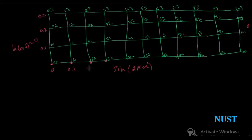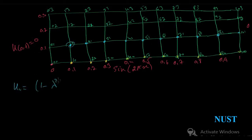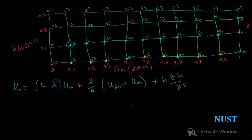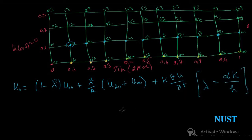X is changing as we move from left to right, and the change in velocity with respect to time moves from bottom to top. Before we use the governing equation, we have to find u(1,1) through either case 1 or case 2 — I will be using case 2. Here lambda is equal to alpha times k divided by h, where alpha equals 1, k equals h, so lambda equals 1.